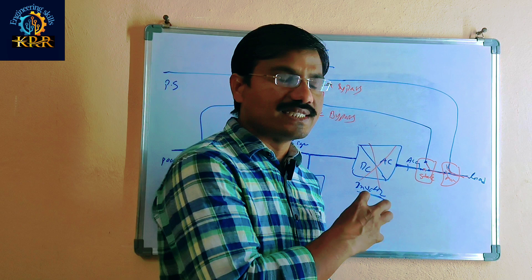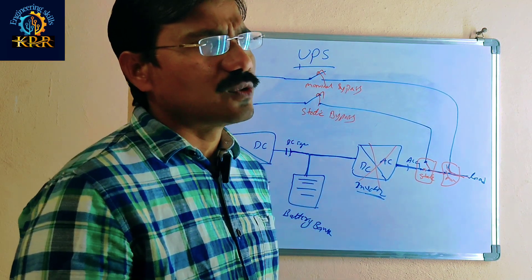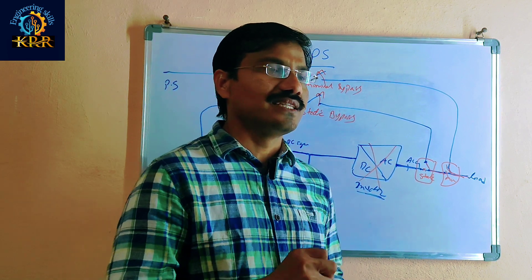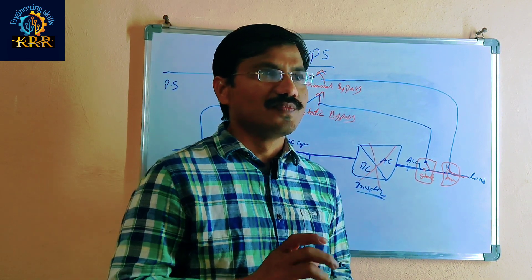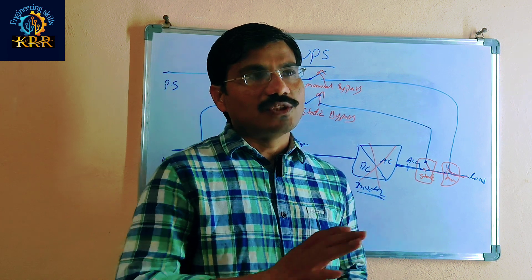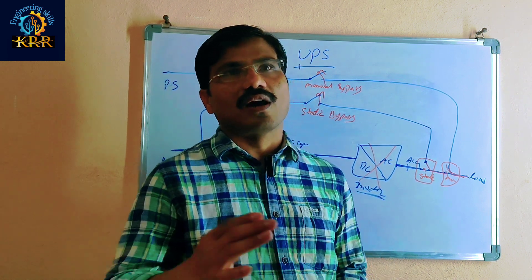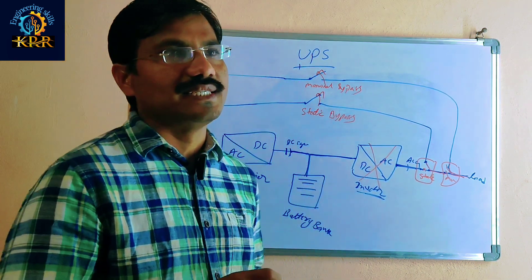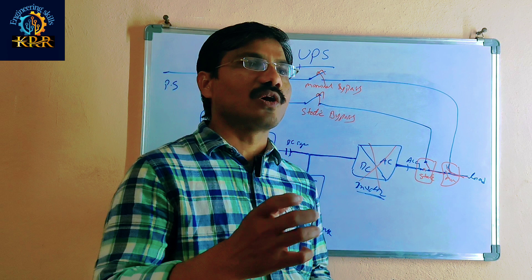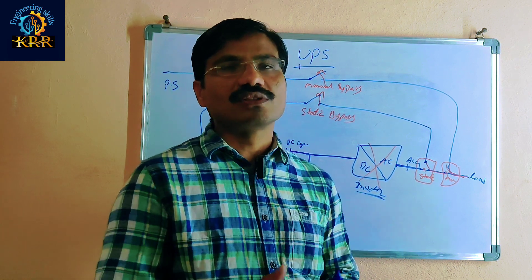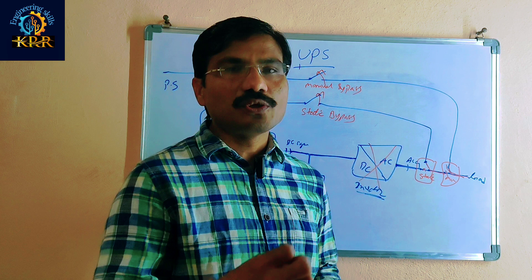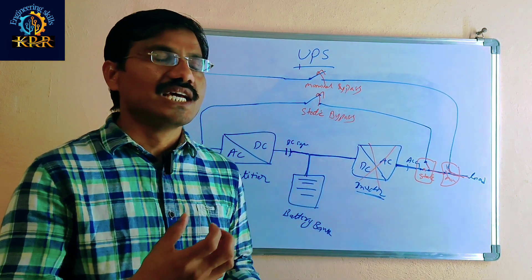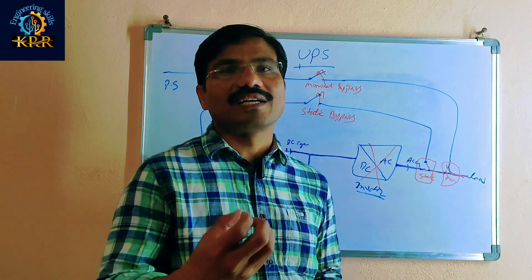One more device also is there inside this UPS: the isolation transformer. The use of the isolation transformer in UPS is: first, isolation of the neutral output from the source output; second, it limits the fault current at the downstream level; third, it reduces generated harmonics — it blocks the turbulent harmonics.